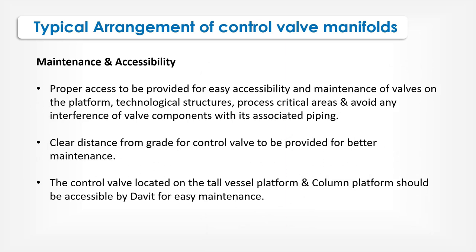Maintenance accessibility: proper access is to be provided for ease of accessibility and maintenance of valves on the platform. Technological structures in process-critical areas must avoid any interference of valve components with associated piping. Clear distance from the grid for the control valve is to be provided for better maintenance. The control valve located on tall vessel or column platforms should be accessible by davit for easy maintenance.